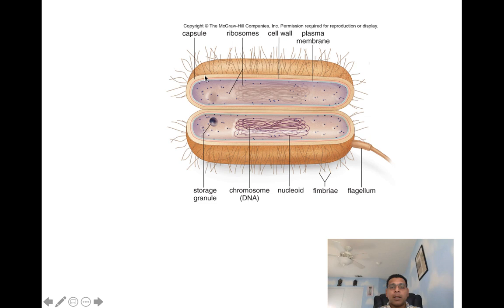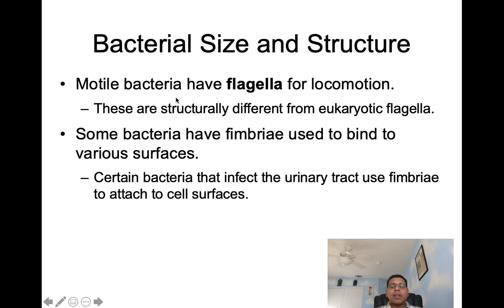Motile bacteria have flagella for locomotion, which are structurally different from eukaryotic flagella. Some bacteria also have fimbriae, used to bind to various surfaces. Certain bacteria that infect the urinary tract use fimbriae to attach to cell surfaces.